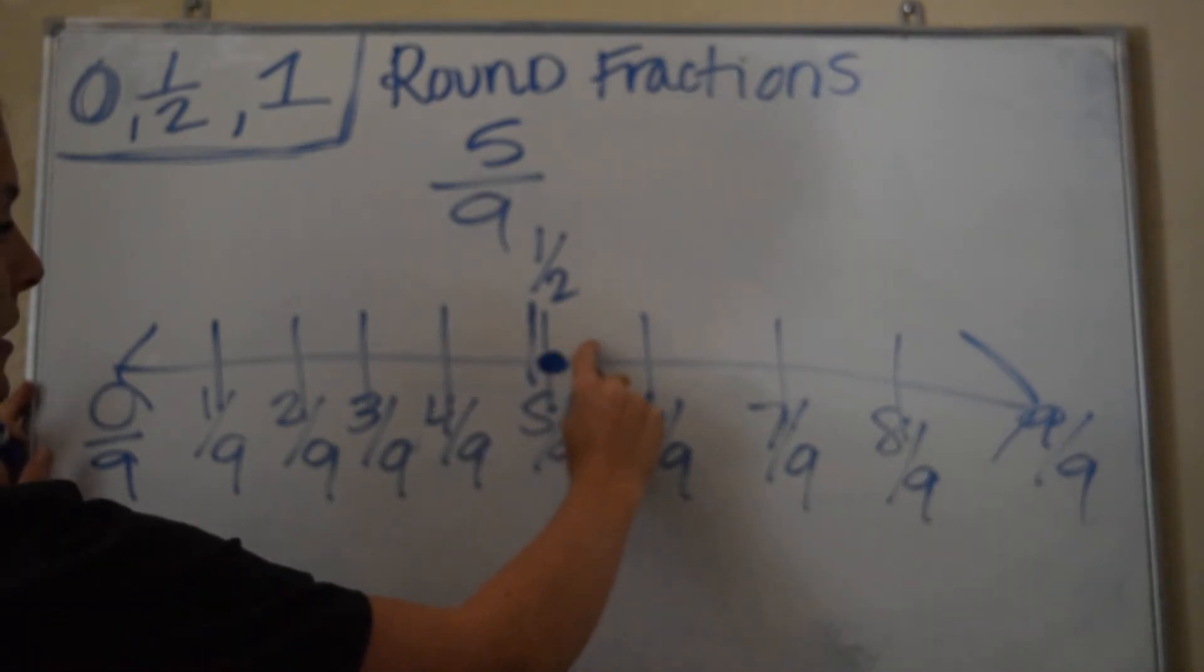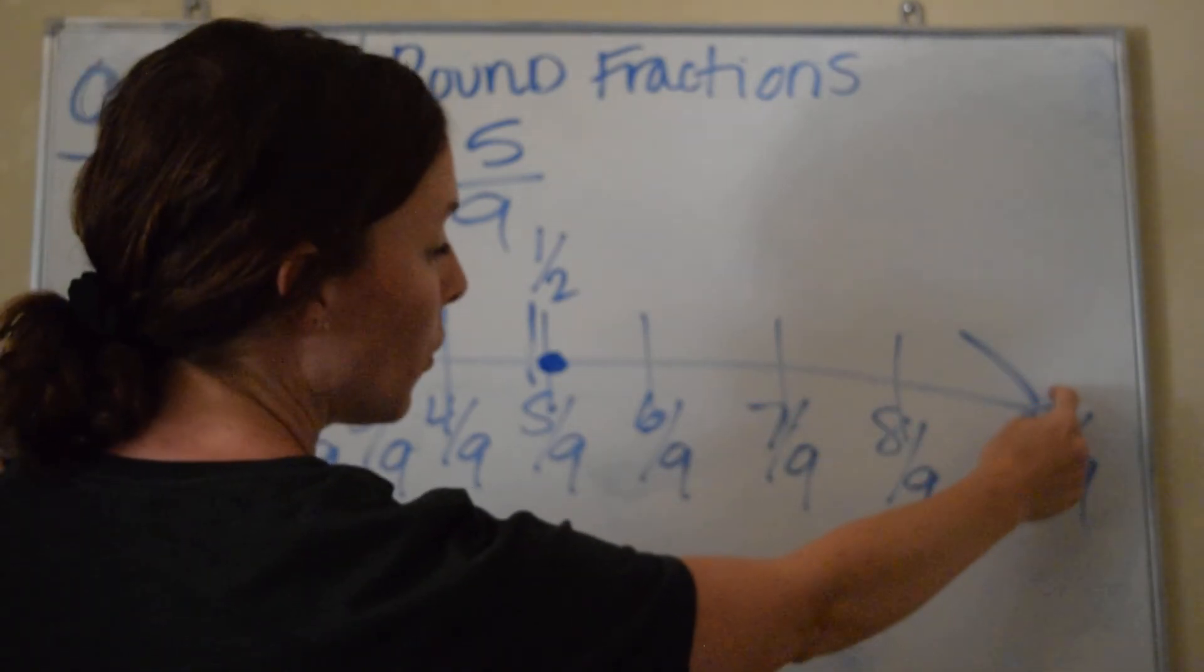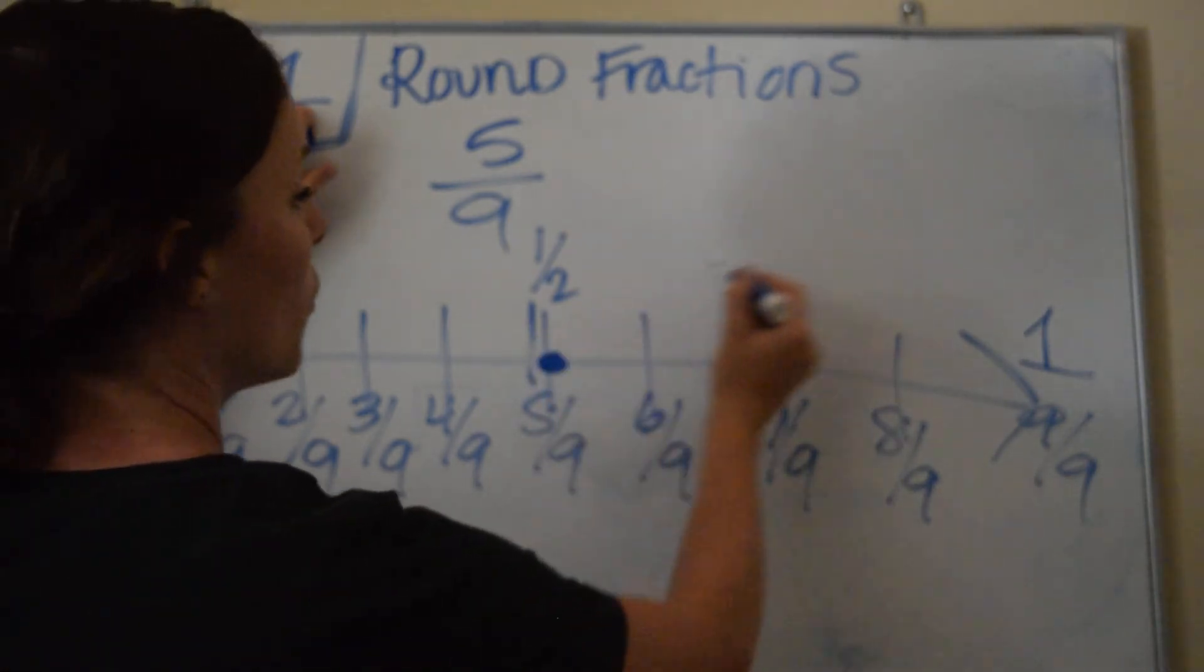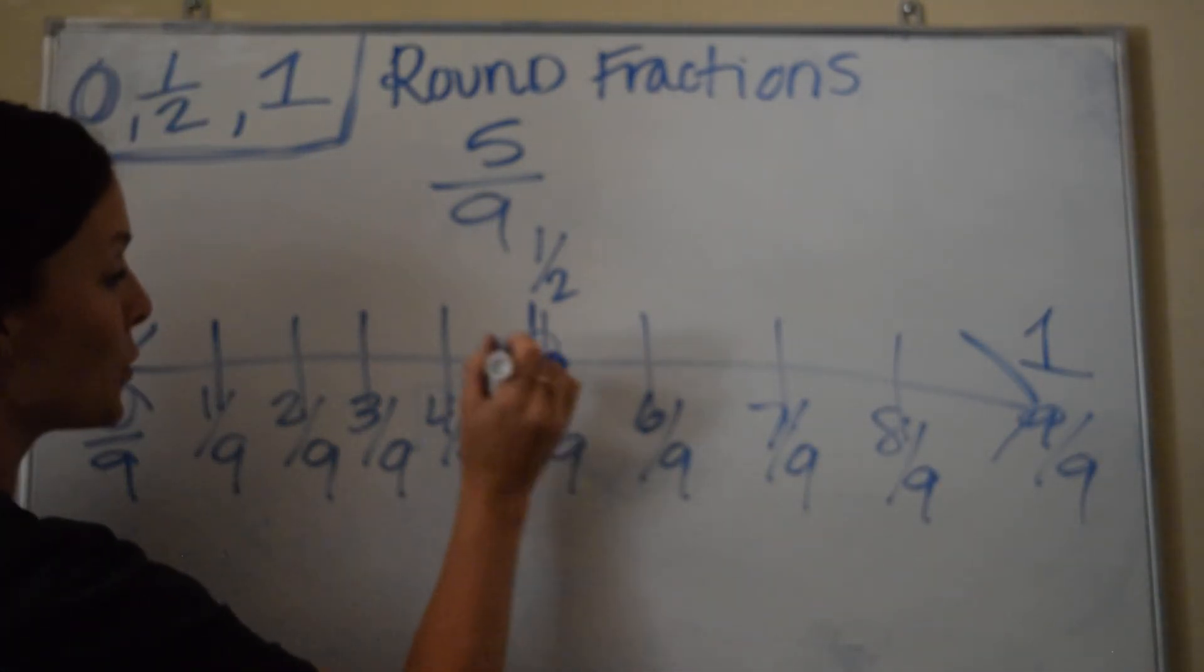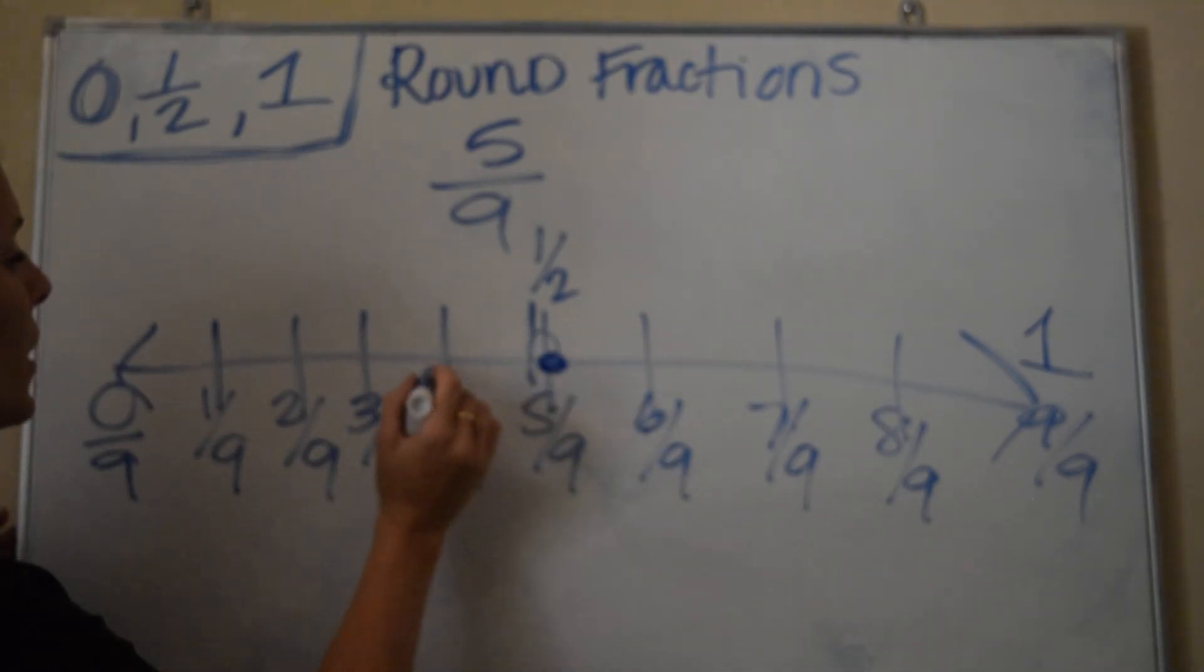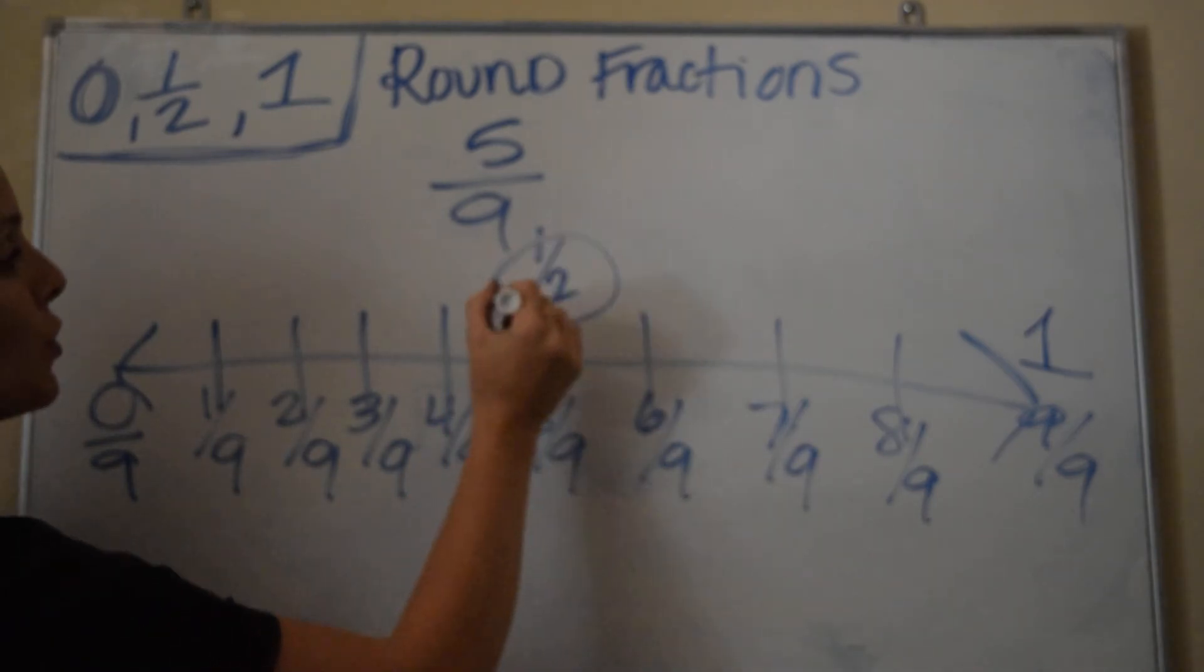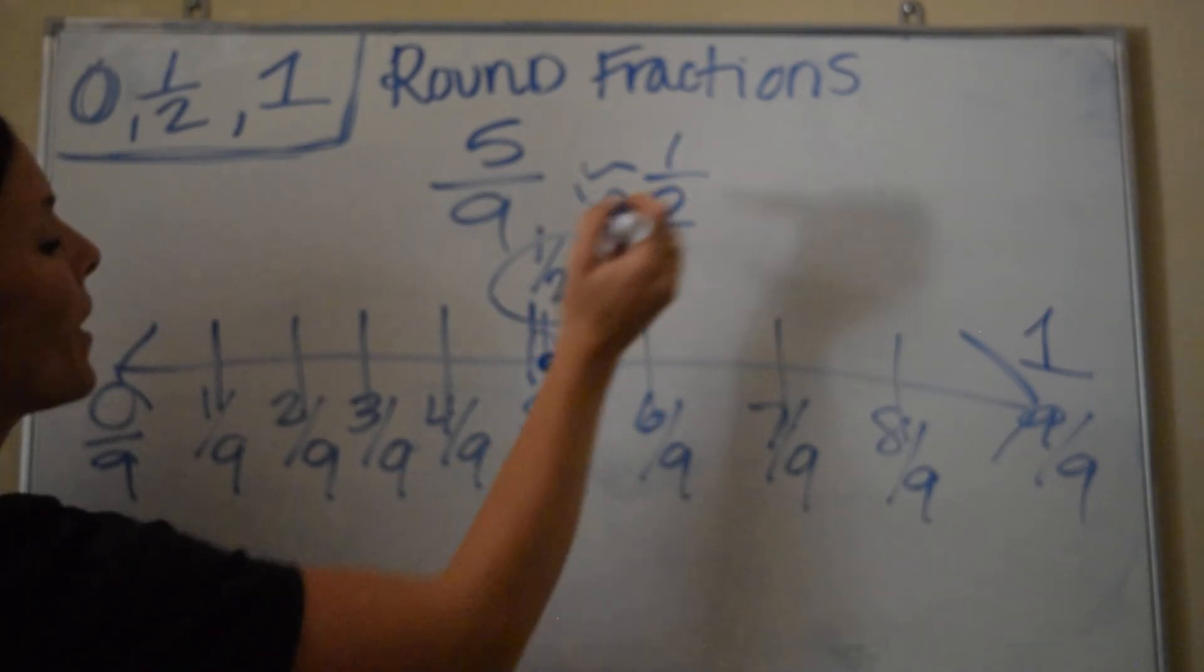So 5/9ths is 1, 2, 3, 4 away from a whole, right? This is the 1. It's 4 away from the whole. It's super, super close to a half, and it's 1, 2, 3, 4, 5 away from 0. So it's closest to a half. So we're going to say 5/9ths is rounded to 1-half.